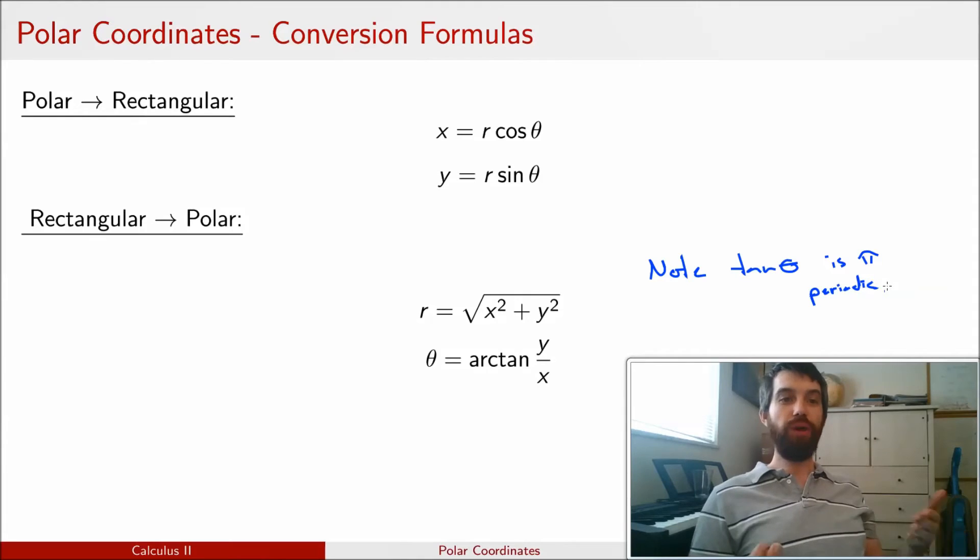And we're going to see in the next example that we often try to write this in the standard form with a positive R and with a theta being between 0 and 2 pi.